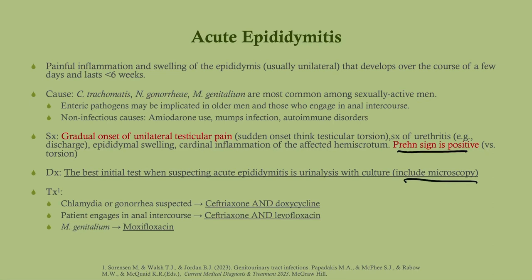On microscopy you may actually be able to visualize the organism. If you don't visualize any organism, you really need to think of chlamydia trachomatis. If chlamydia or gonorrhea is suspected, go with ceftriaxone and doxycycline together. If the patient engages in anal intercourse, give levofloxacin instead of doxycycline, as it has better activity against enteric organisms. If the patient has Mycoplasma genitalium, seen on microscopy, go with moxifloxacin — the best drug even within the fluoroquinolone family for that organism.